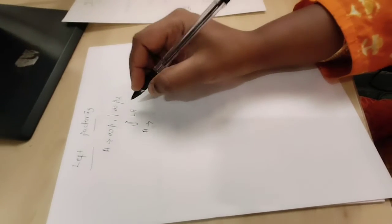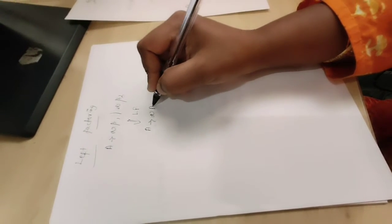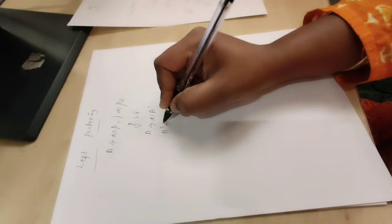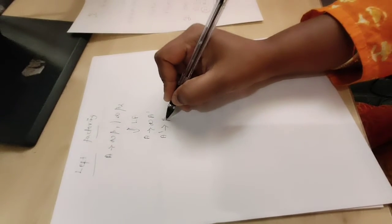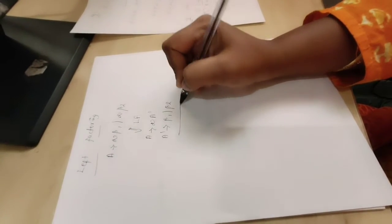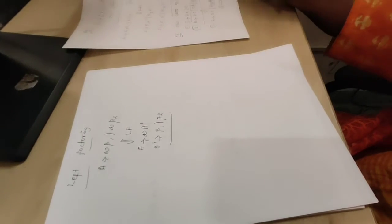The solution for that is A produces alpha A dash, where A dash produces beta 1 or beta 2. Now let us see one example for that.